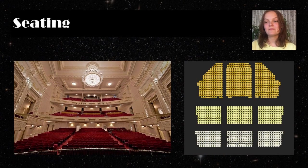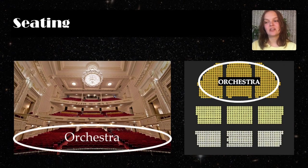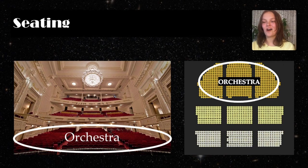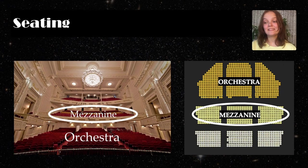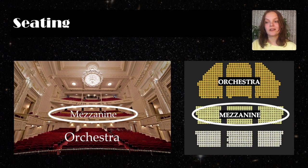Now let's discuss some seating. The orchestra is the closest seating section in relation to the stage, and because of this they're usually the most expensive seats in the theater. These seats are on the ground level, and because the stage is frequently elevated, you may have to look up frequently during the play depending on your proximity to the stage. The mezzanine is an elevated seating section that hangs above the orchestra. The architecture varies per theater, so check the seating chart for each theater for more information.